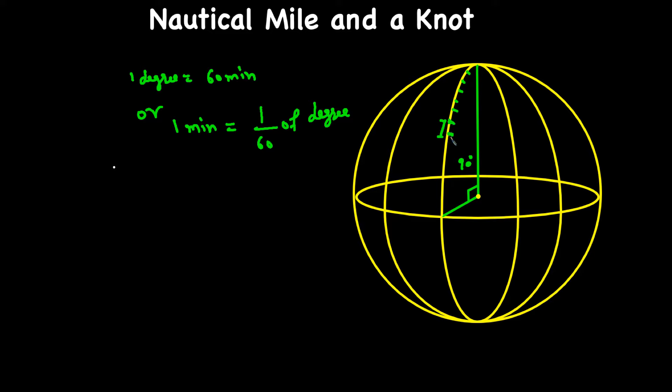And that one minute is called a nautical mile. So a minute of arc on the planet Earth is one nautical mile. So basically, this one minute is one nautical mile. One minute of latitude along any longitude line is called a nautical mile.